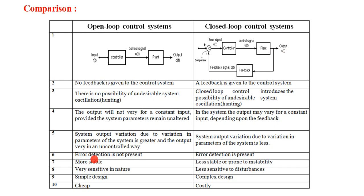Sixth point: error detection is not present in open loop systems — there is no error signal. In closed loop systems, error detection is present so that an error signal is produced. Seventh point: open loop control systems are more stable, while closed loop control systems are less stable or prone to instability.